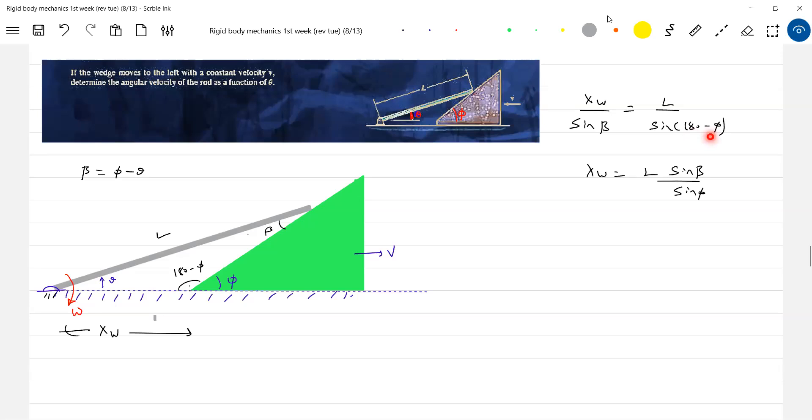The sine of 180 minus phi will be different. So what is sine beta? Sine beta will be... I'll write one more step. Beta will be phi minus theta.